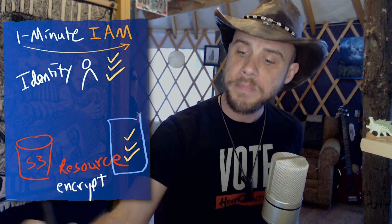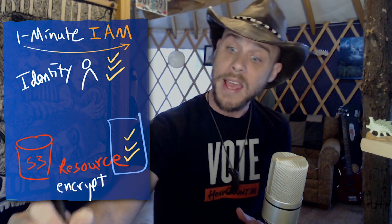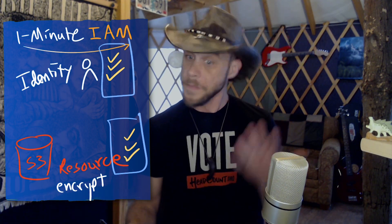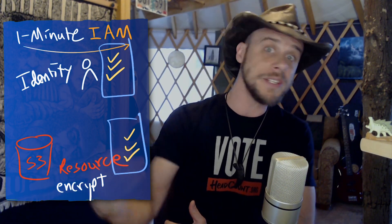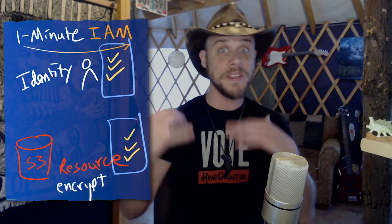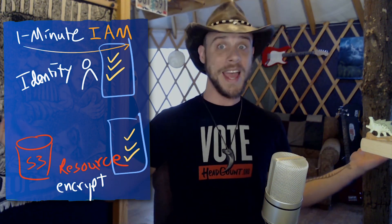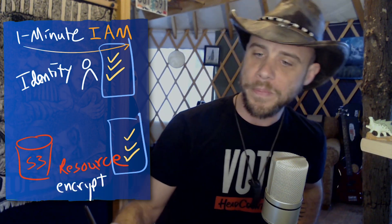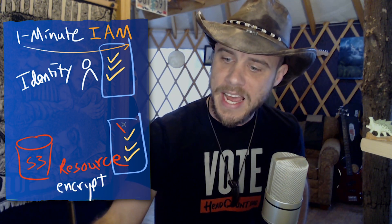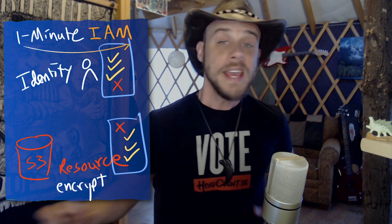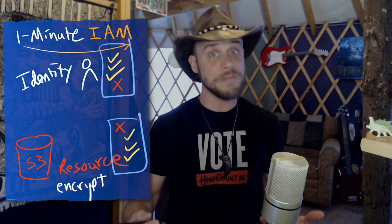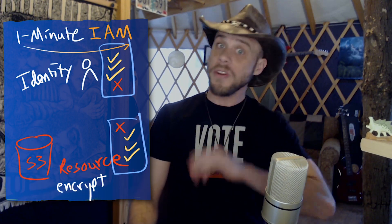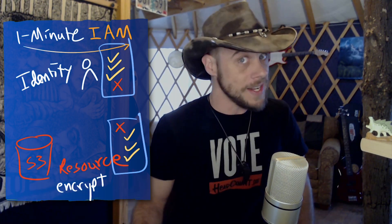We're looking at the combined permissions of the resource policy combined with the permissions of the identity policy. Keeping in mind that it's okay for the permissions to overlap if they're allow statements — two different allows don't cause a problem. But therein is the real big crux of it: if there is a deny in either of these policies, it can easily override any of the other allows that might've been granted in the other policies, either on the resource or on the identity side.